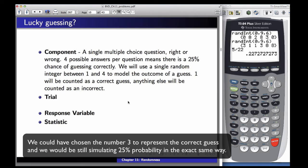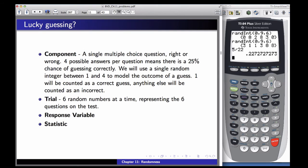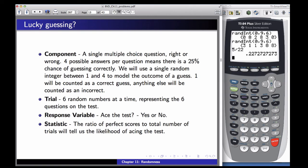Now, what does a trial look like here? It's the same thing again because there are six questions on the test. So we're going to generate six of these random numbers, 1 to 4, each representing whether or not we got the question right on the test. Now, what's the response variable? This is a little bit different angle than we took before. Did we ace the test, yes or no? And what are we going to do? Well, we're going to take the ratio of all of the perfect scores to the total number of trials and that will tell us the likelihood of acing the test.